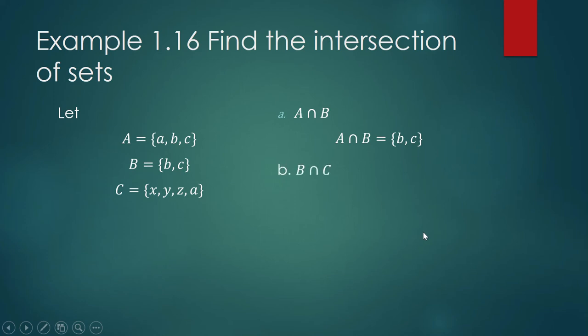How about B intersection C? Let us look at set B and set C. Do they even have an intersection? It has no intersection. It has no common element. So that means their intersection is an empty set.